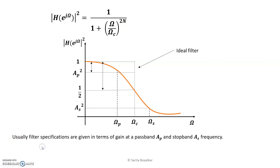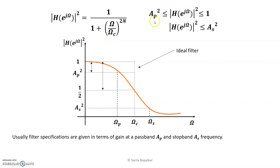Let's start. This is the magnitude specification for the magnitude square response. The magnitude square response varies between ap² to 1 in the pass band, and between 0 to as² in the stop band. We can use this magnitude specification to find the order of the filter.